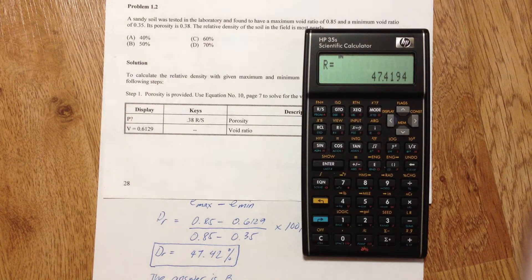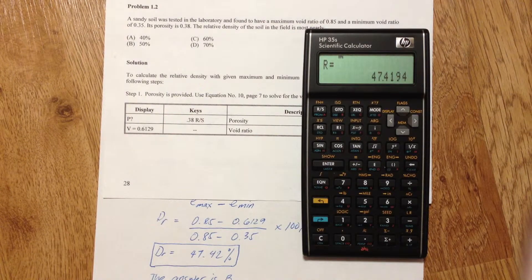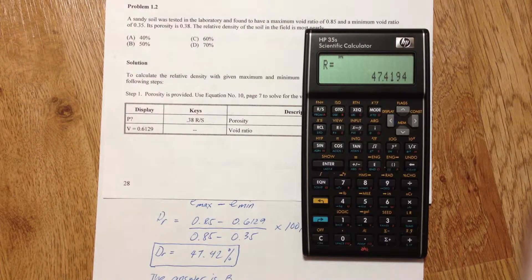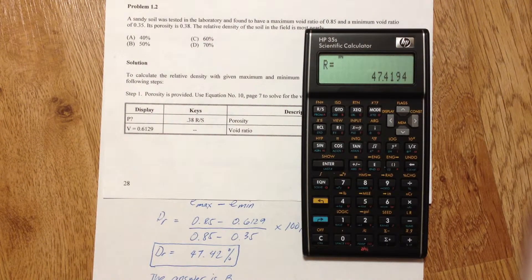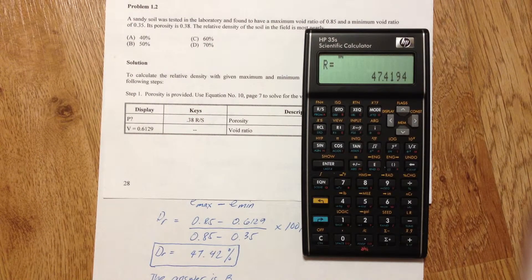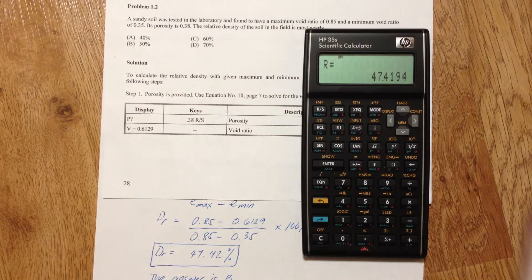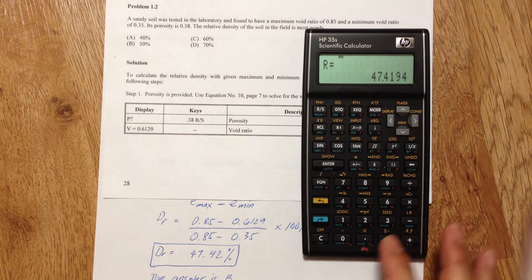And there's our relative density of 47.4194 percent. And that's how you solve the relative density involving maximum and minimum void ratio and void ratio. So thank you for watching.